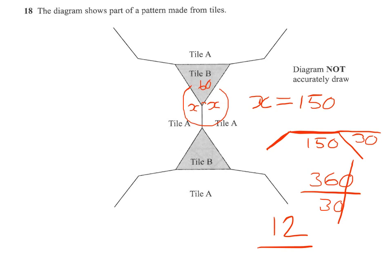So the answer to this problem then is that the larger tile A has 12 sides. And that's the answer to this question.